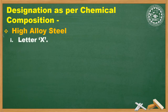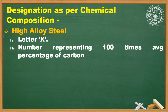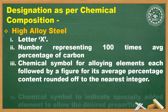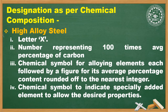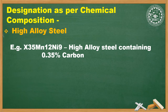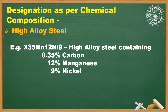For high alloy steels, the first letter will be X. The second number represents 100 times the average percentage of carbon, then the chemical symbols of alloying elements each followed by a figure for its average percentage content rounded off to the nearest integer. For example, X35Mn12Ni9 is a high alloy steel containing 0.35% carbon, 12% manganese, and 9% nickel.